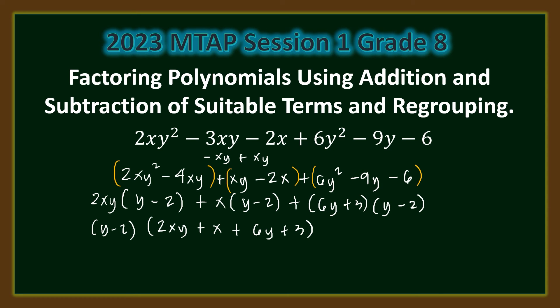Notice that the second factor polynomial 2xy plus x plus 6y plus 3 can still be factored using regrouping. In (2xy plus x), x is a common monomial factor, giving x times (2y plus 1). In (6y plus 3), 3 is a common monomial factor, giving 3 times (2y plus 1).